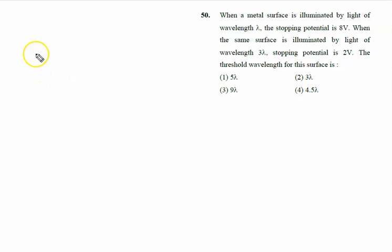When a metal surface is illuminated by light of wavelength lambda, the stopping potential is 8 volt. When the same surface, it means work function is same, is illuminated by the light of wavelength 3 lambda, the stopping potential becomes 2 volt.